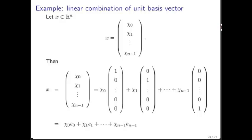And then we can use summation notation to write it as the sum from i equals 0 to n minus 1 of chi sub i e sub i. And this is going to become very important next week.